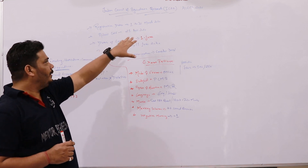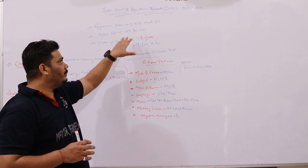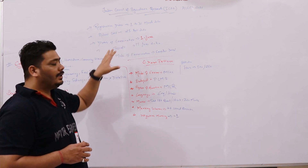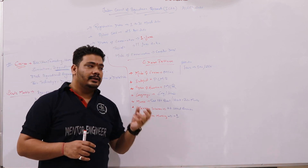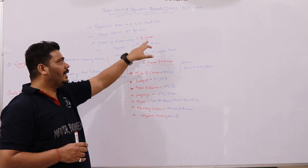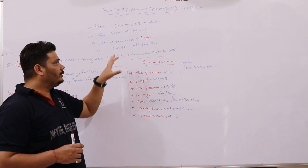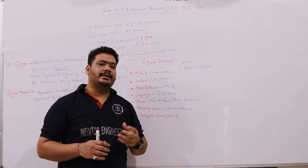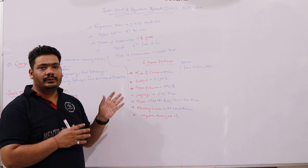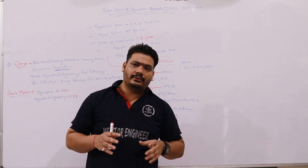The admit card download date will be 25th April 2020. The date of examination will be conducted on 1st June 2020, and the result will be declared on 15th June 2020. Please remember these important dates.